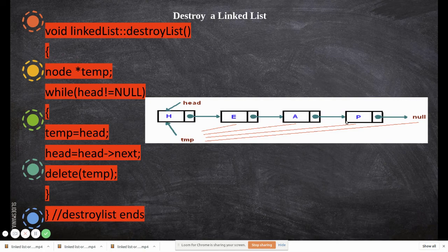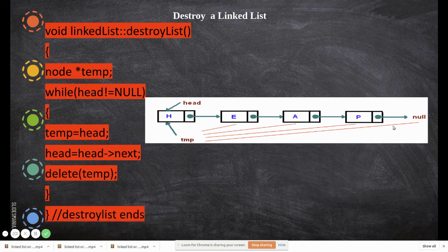Now the condition head is not equal to null fails, because head is equal to null, which means all the nodes have been deleted. The while loop ends, and at this point all the nodes in the linked list have been disconnected and deleted.